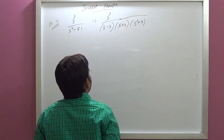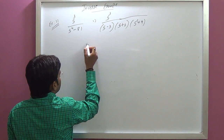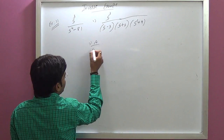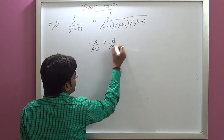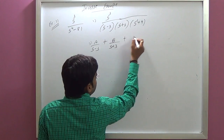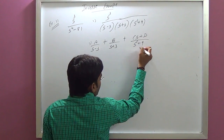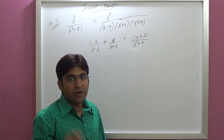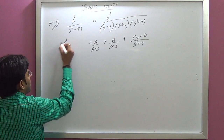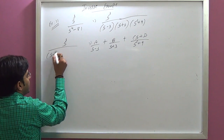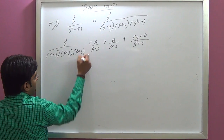Now we use partial fractions. We write A upon S minus 3, plus B upon S plus 3, plus CS plus D upon S squared plus 9. The original expression was S cubed upon (S minus 3)(S plus 3)(S squared plus 9).